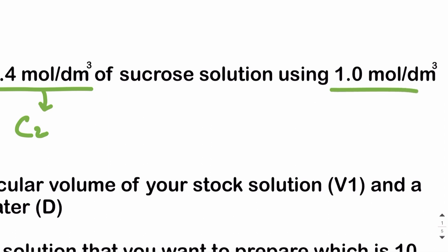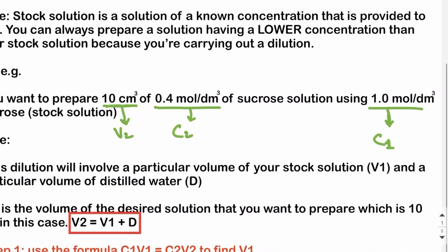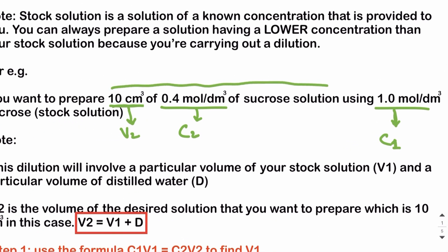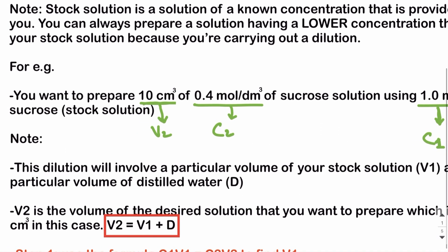The concentration of the stock solution is denoted as C1. To prepare your desired solution, you need to take some volume of your stock solution, denoted as V1, and you also need some volume of distilled water, since you are diluting your stock solution.